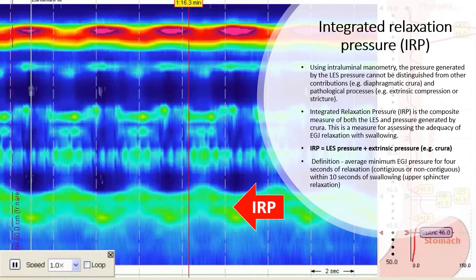This is a measure for assessing the adequacy of esophagogastric junction relaxation with swallowing. This is defined as the average minimum esophageal sphincter pressure for 4 seconds of relaxation, which is either contiguous or non-contiguous within 10 seconds of swallowing, which is indicated by the upper sphincter relaxation.